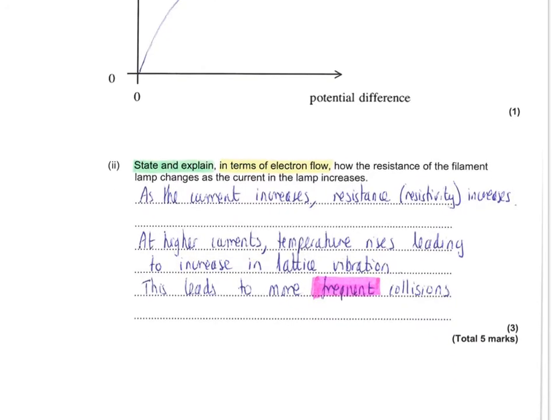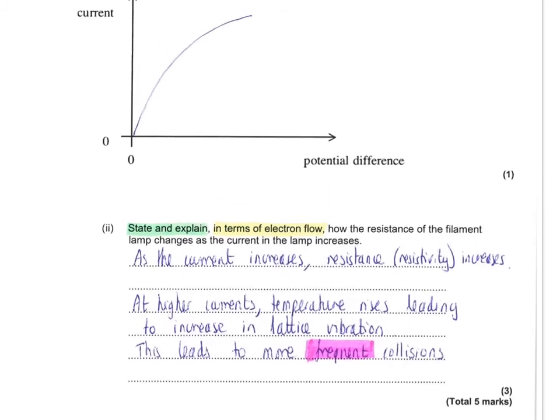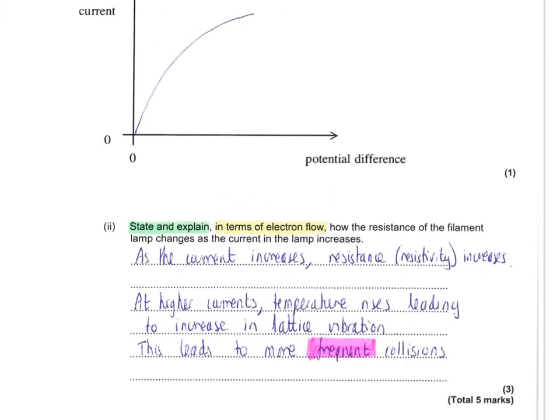Finally, you are asked to state and explain, in terms of electron flow, how the resistance of the filament lamp changes as the current in the lamp increases. Really, you are being asked to explain why the graph has the shape that it has. First of all, stating how the resistance changes: as the current increases, the resistance increases.